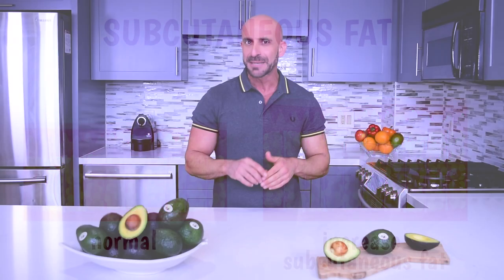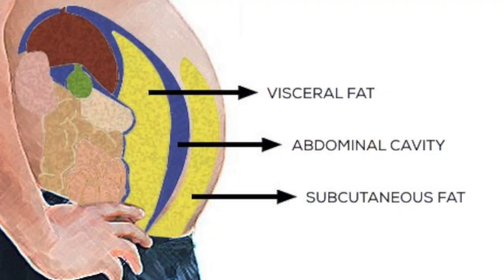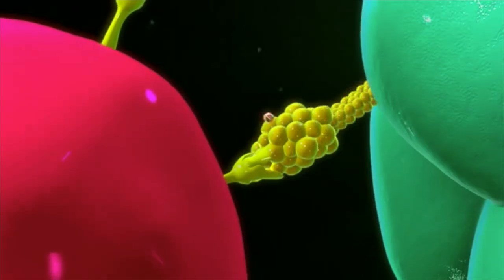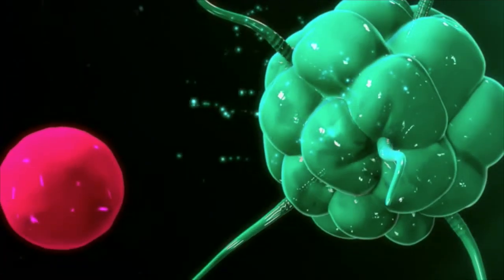The second type of fat is called visceral fat. Visceral fat is located deep in the abdomen and around internal organs like your pancreas, liver, and gallbladder. When someone gains weight, these fat cells are associated with higher production of inflammatory chemicals.